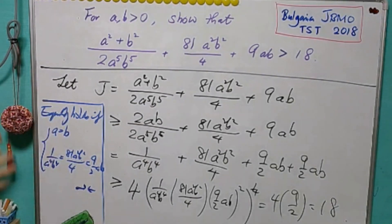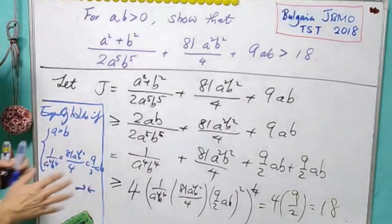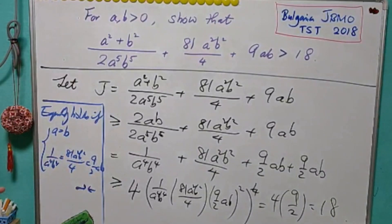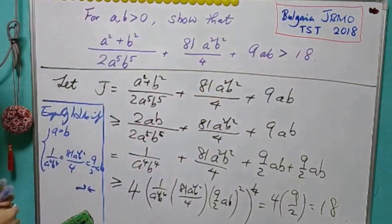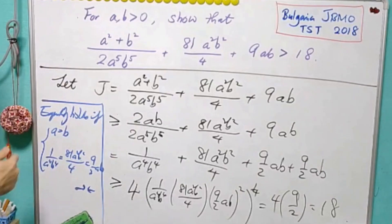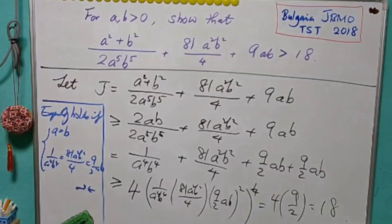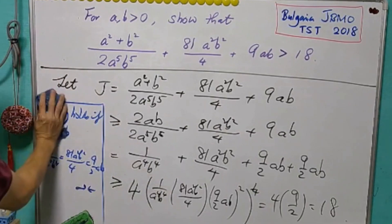But for us, this is only the first half of the question. For the second part of the question, we want to push the lower bound. Instead of 18, we hope to push it to 20. For the second half of the presentation, I'll show you J is greater than 20. For now, I'll erase here to save some space.